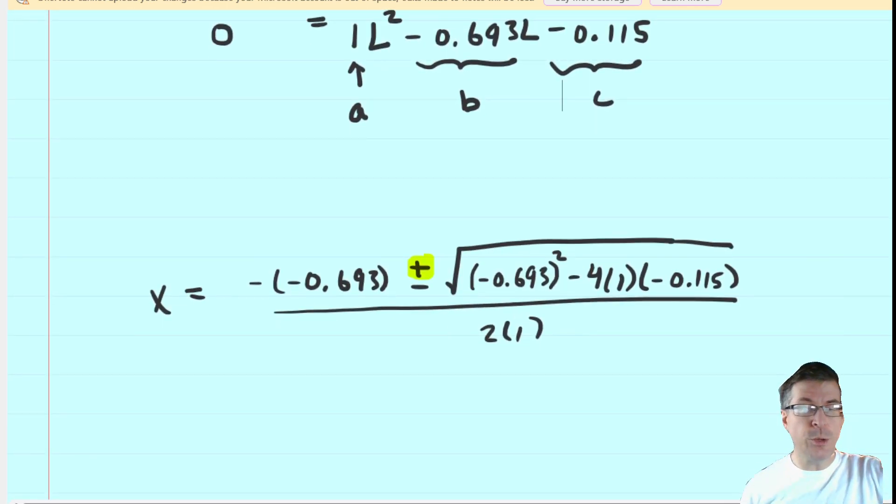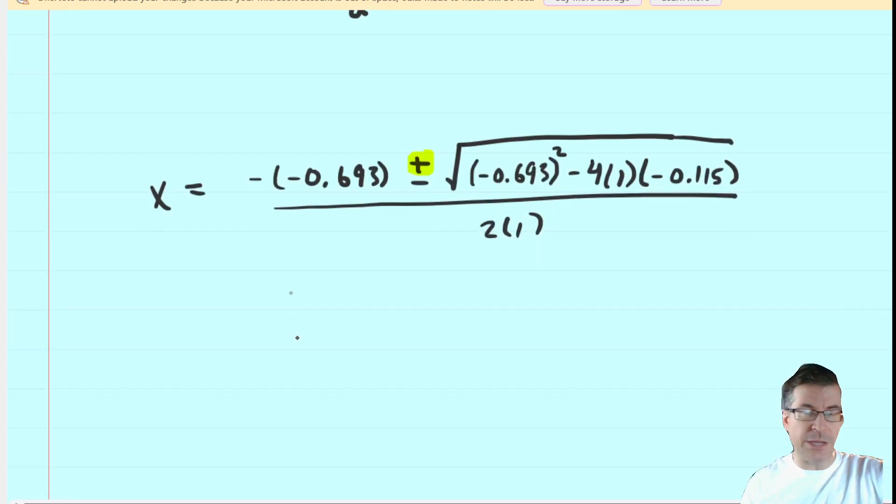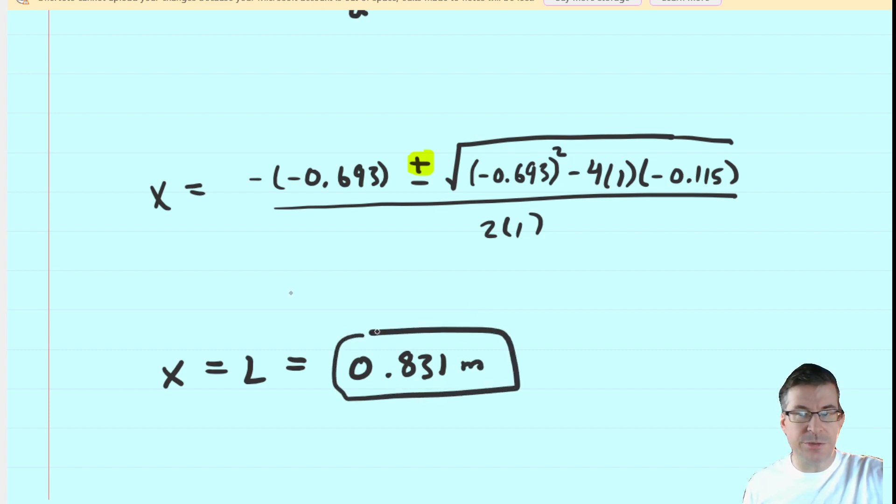So there we have it. We want to use the positive in the formula, because if you use the negative, then the length turns out to be negative. So our x, or actually our l, because the original quadratic equation we wrote down had a variable of l, will turn out to be approximately 0.831 when we use the positive in the quadratic formula. This will be in meters, and this indeed is the correct answer to the question.